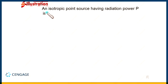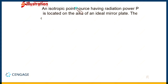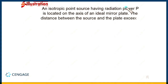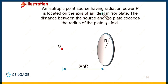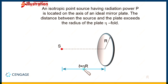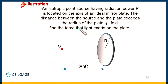In this illustration, it is given an isotropic point source having radiation power capital P is located on the axis of an ideal mirror plate. The distance between the source and the plate exceeds the radius of the plate eta times. That means the distance between the point source S and the centre of this plate is eta times capital R. We need to find the force of the light exerted on the plate.